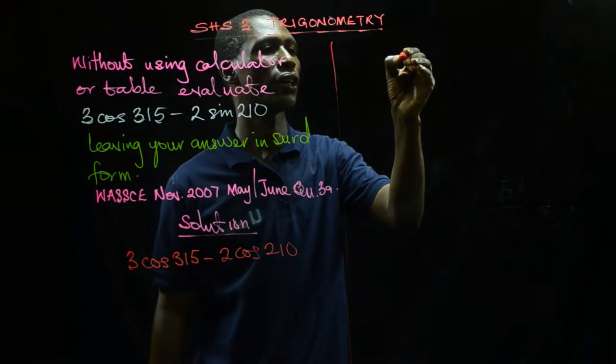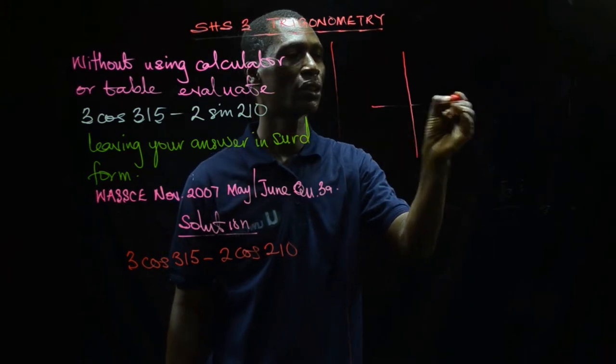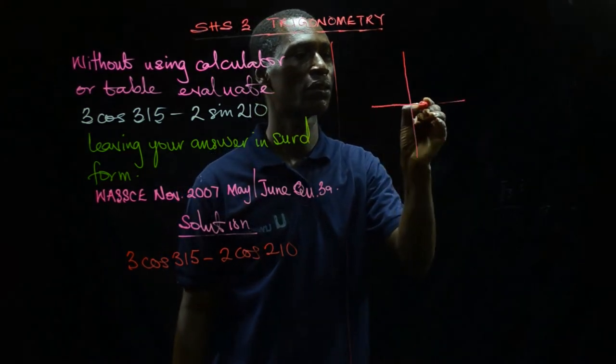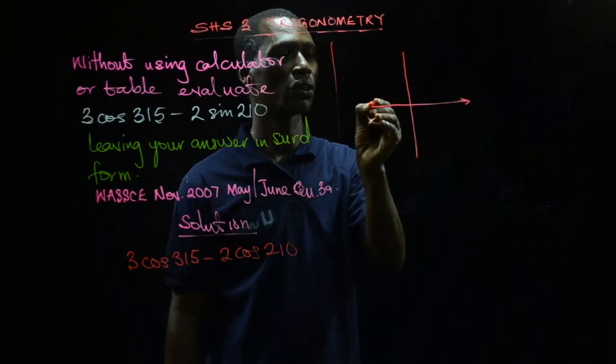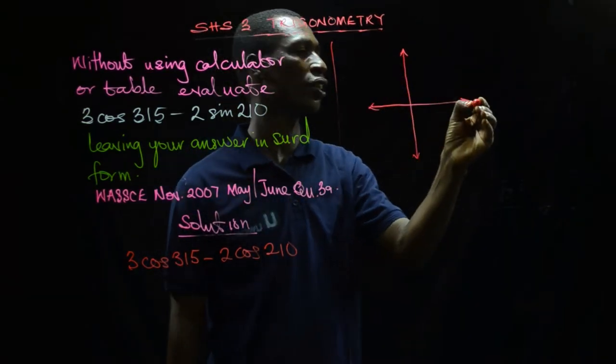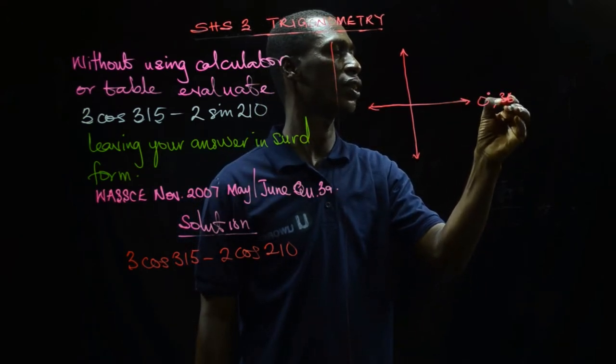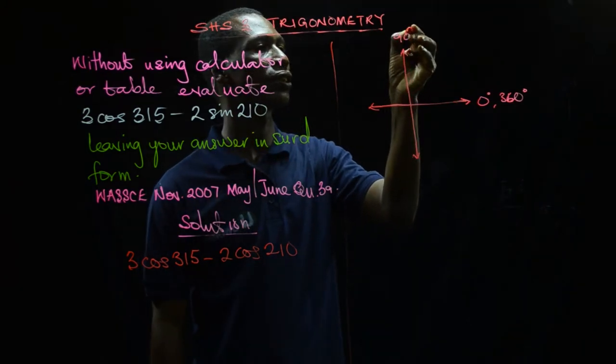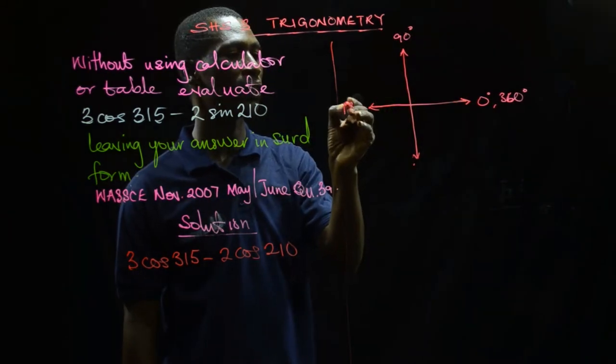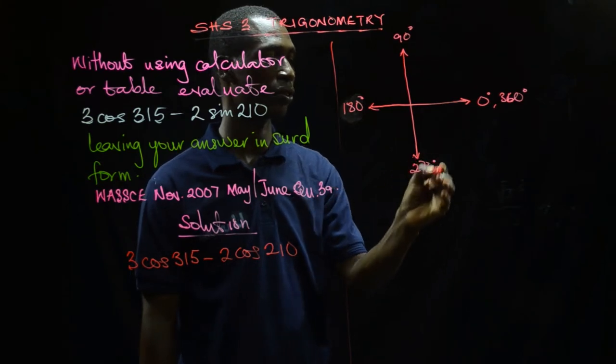I'll draw the diagram and indicate the movement. I've got my x-y axes. Here is 0 degrees, also 360 degrees, 90 degrees, 180 degrees, then 270 degrees.